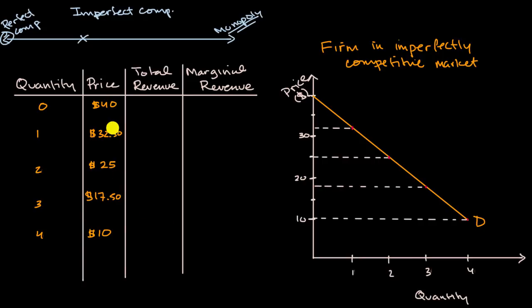All right, now let's do it together. So our total revenue, obviously when we sell nothing, we have zero total revenue. Now when we sell one unit at $32.50, well then our total revenue is going to be $32.50. No surprise there. Now it's going to get interesting.